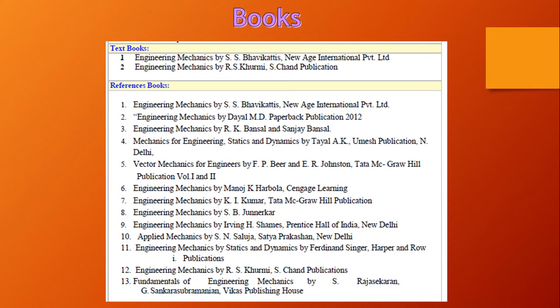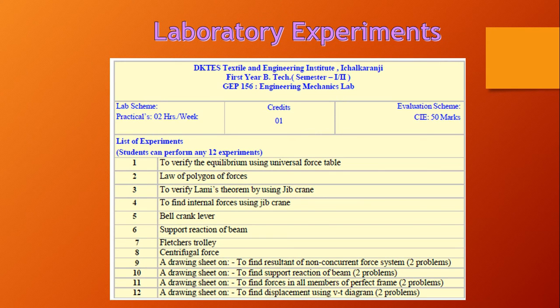One more video is there in this channel — you can refer to that video to find other important books. Laboratory experiments are also part of this course, with CIE marks of 50, 1 credit, and 2 hours per batch allocated. There are 12 experiments included in this term work.